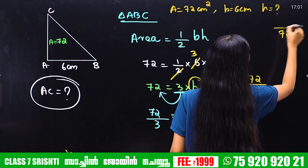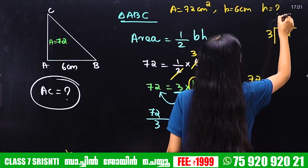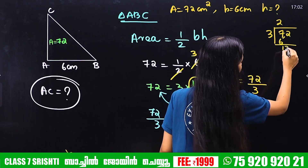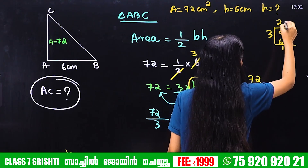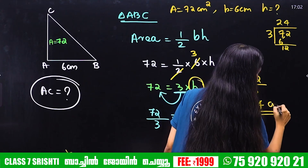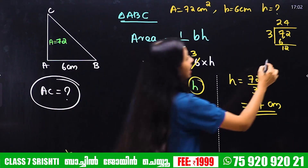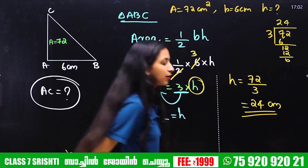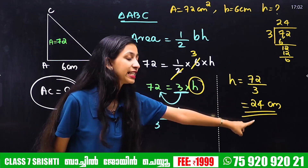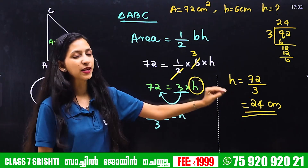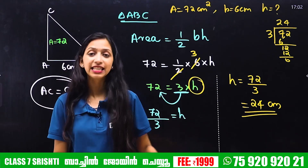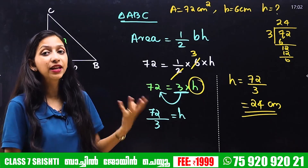72 divided by 3: 3 goes into 7 twice, giving 6 remainder; 3 goes into 12 four times. So h is equal to 24 cm. The answer is 24 cm.